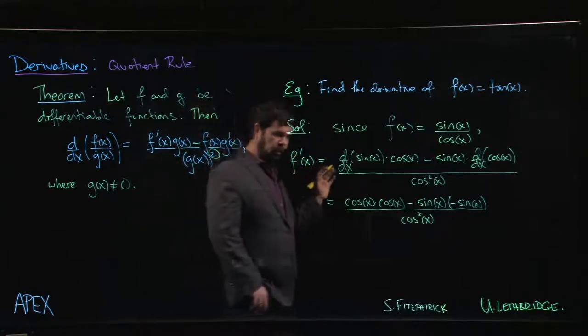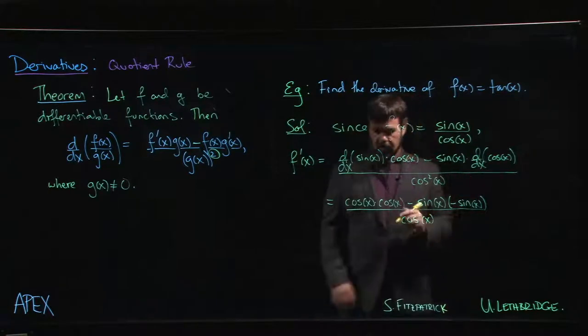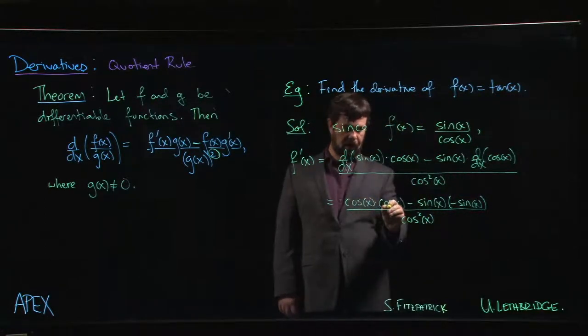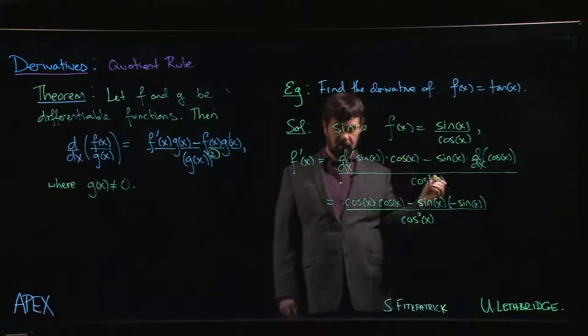Because what do we have? cos x times cos x - that is cos squared x. Minus sine x times minus sine x is sine squared x, with a plus.